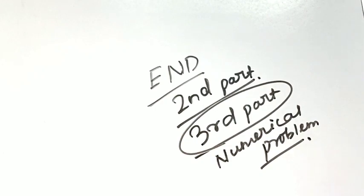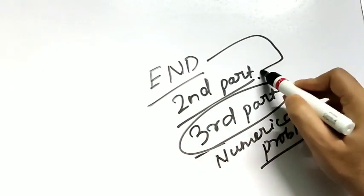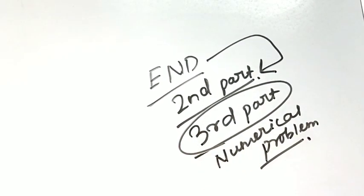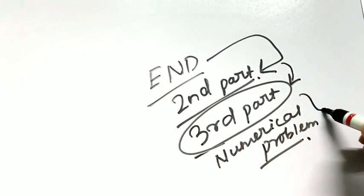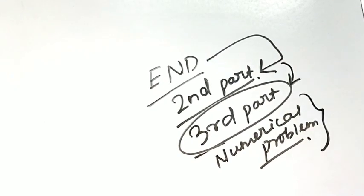This is the end of part two of physical quantities and measurement. All the theories in the book have been explained. I hope you go through the video carefully to understand each and every part. Soon we'll start part three of the chapter, where we will solve some numerical problems. Bye!